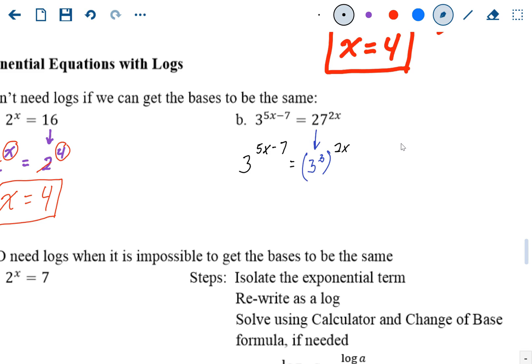So now that our bases are the same, we'll get rid of them and only concentrate on the exponent part. On the left side you have 5x minus 7, on the right side you have 3 to the 2x power. When you have a power raised to a power, you always multiply. We'll just solve this equation: 5x minus 7 equals 3 times 2x, so 5x minus 7 equals 6x.